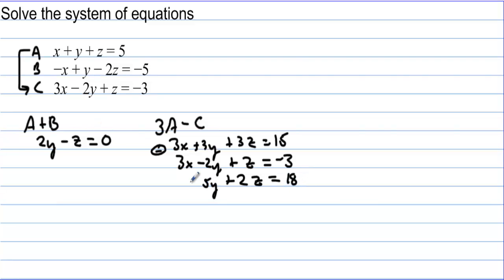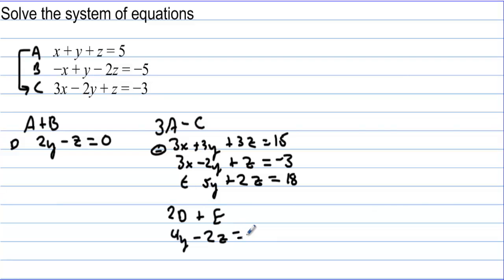Now we have two equations where x is eliminated. Call them equation D (2y minus z equals 0) and equation E (5y plus 2z equals 18). We can take 2 times D plus E to eliminate z: 4y minus 2z equals 0, plus 5y plus 2z equals 18. Eliminating z gives 9y equals 18.